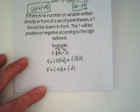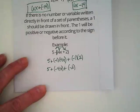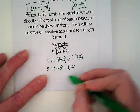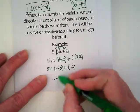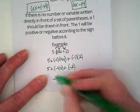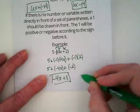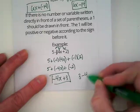Do we have any like terms? 5 and negative 2. 5 and negative 2 would become... So I'm going to rewrite this as negative 4x plus 3. Or it could be written as 3 minus 4x.